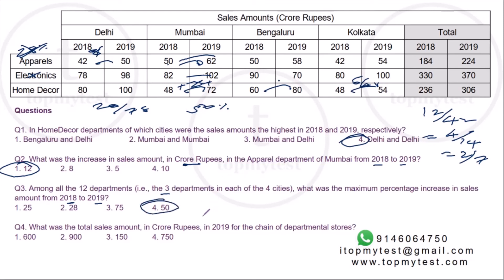Question 4: what was the total sales amount in 2019 for the chain? Adding up all departments: 224 plus 306 is 530, and 530 plus 370 is 900 crores. Option 2. This question was calculation-intensive but not conceptually difficult — you just needed to sum up the totals across all three departments.